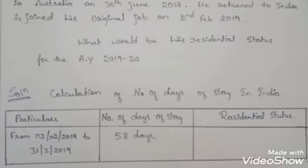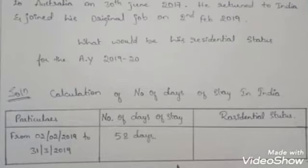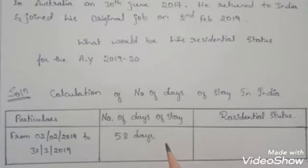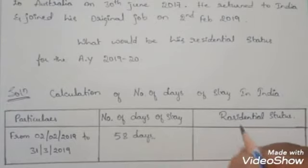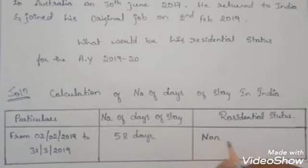Checking the basic conditions: the first condition requires a minimum stay of 182 days in the previous year — this is clearly not satisfied. The second condition requires a minimum of 60 days in the previous year and 365 days in the preceding four years — he does not satisfy this condition either. When an individual does not satisfy any of the basic conditions, he is treated as a non-resident. So here, Mr. Y is a Non-Resident of India.